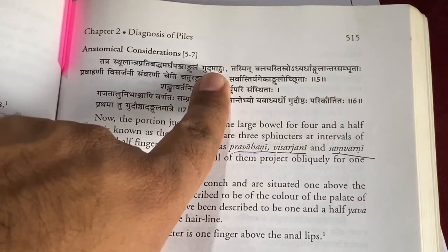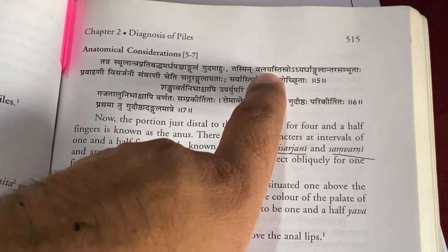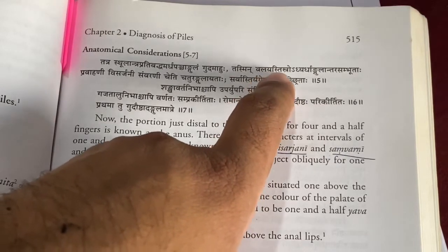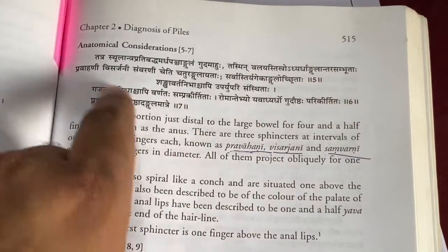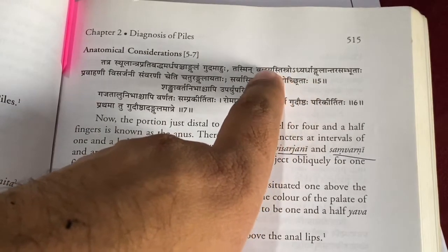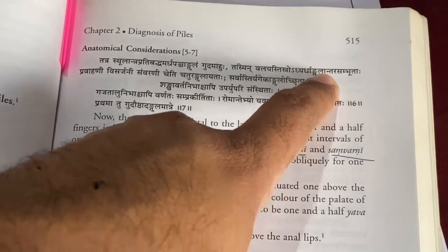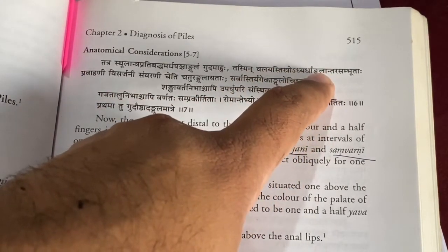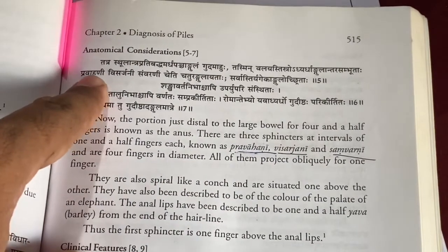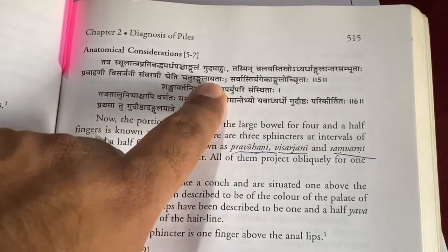So what he says: the distal 4.5 inches approximately, that part is called as gudha. That part is called as the rectum. There are valayas—we call them as the walls. So he called these are the valayas. Adyardha angulaha means 1.5 inch, one and a half angula. Then he named it as Pravahini, Visarjini, Samharani.